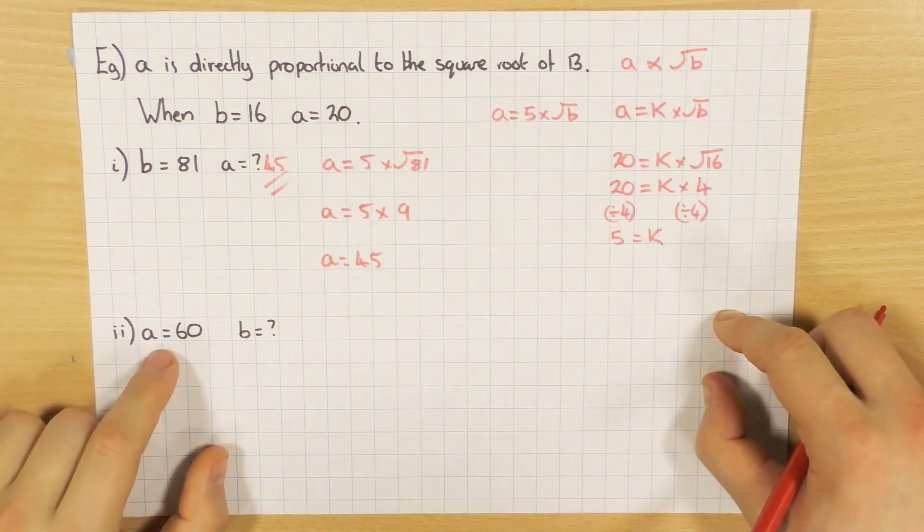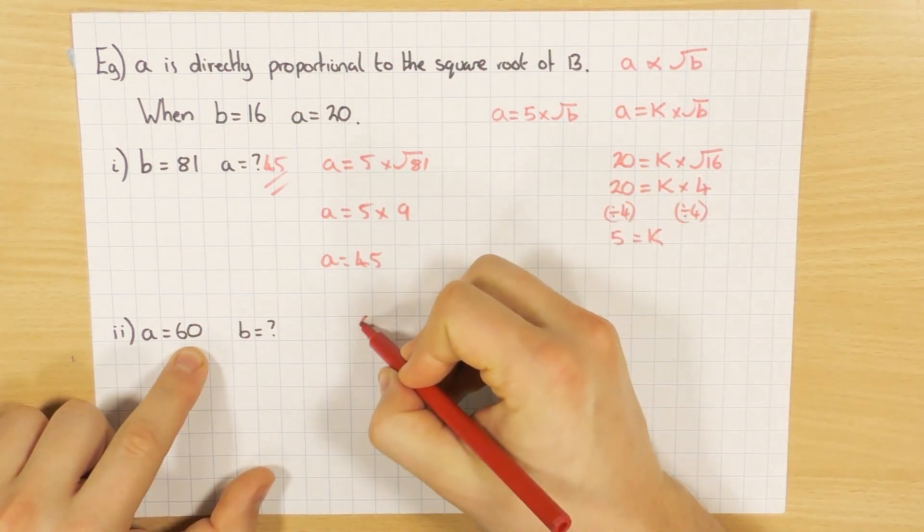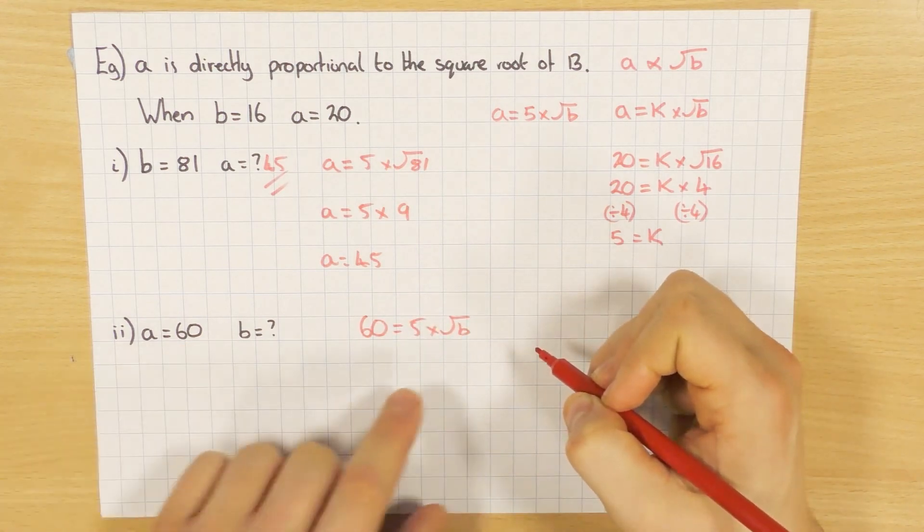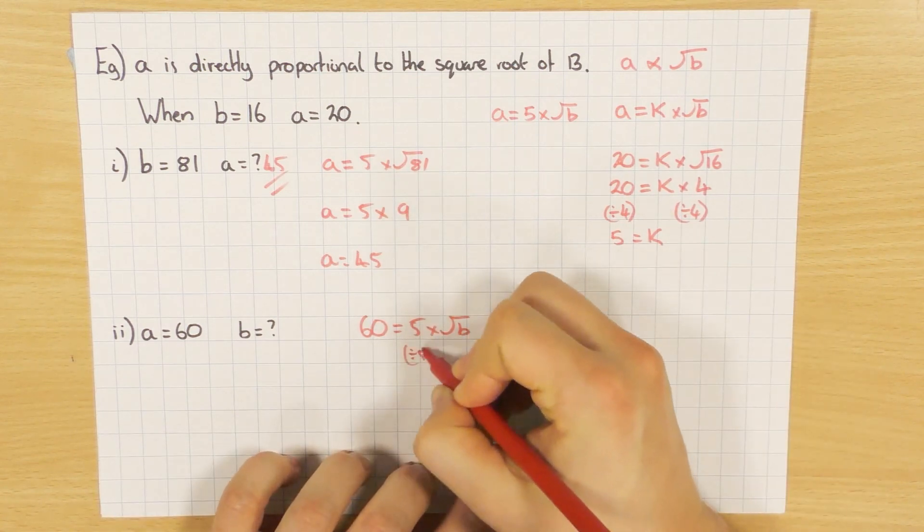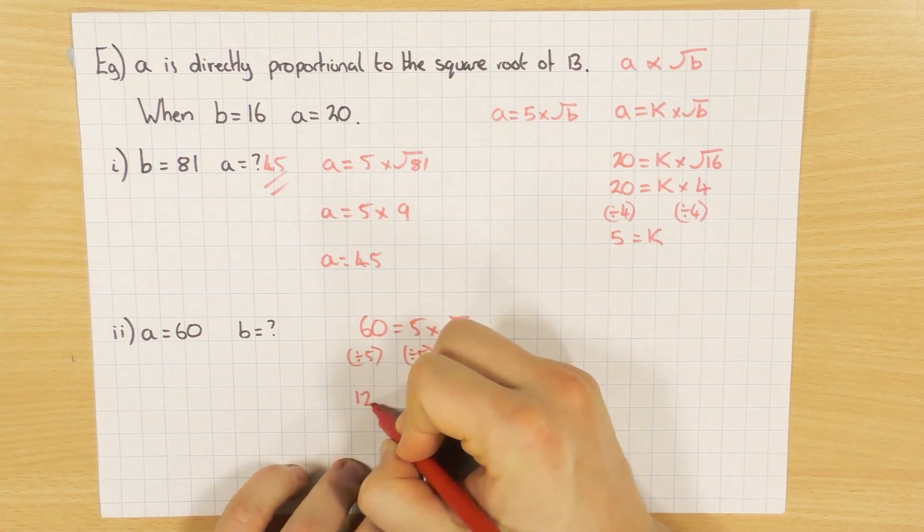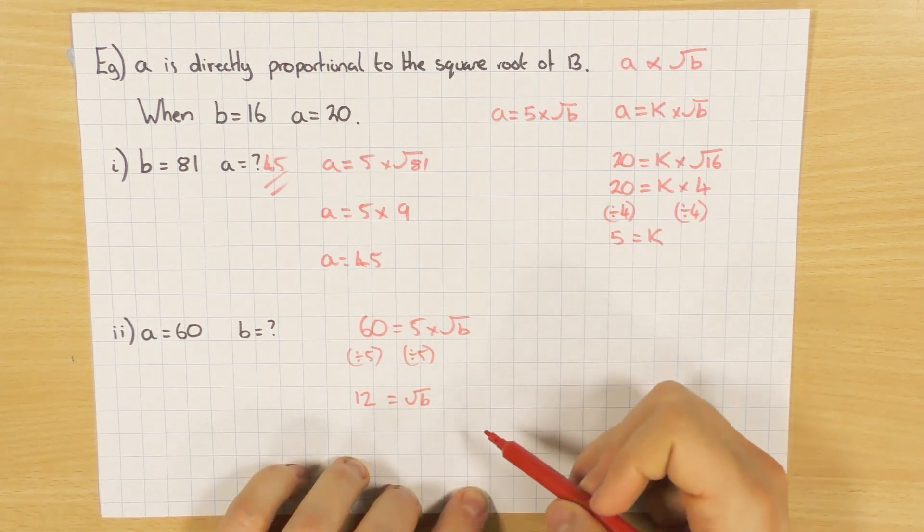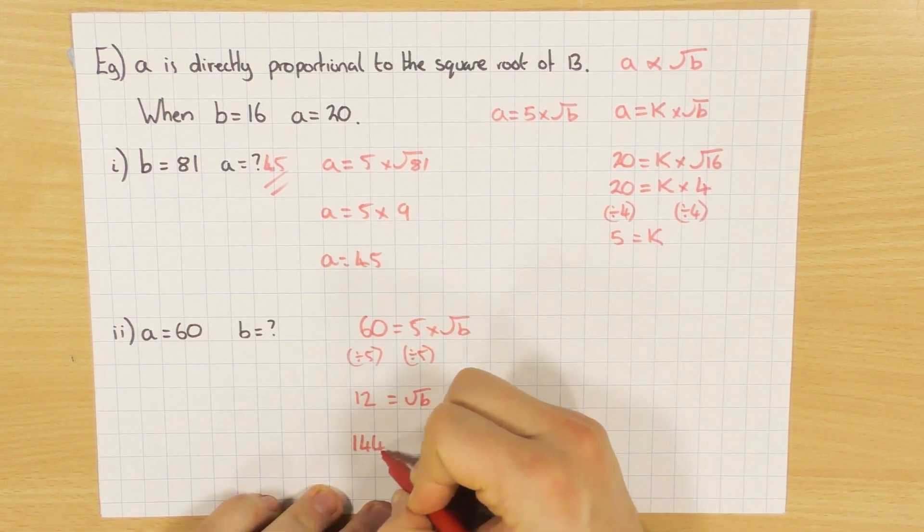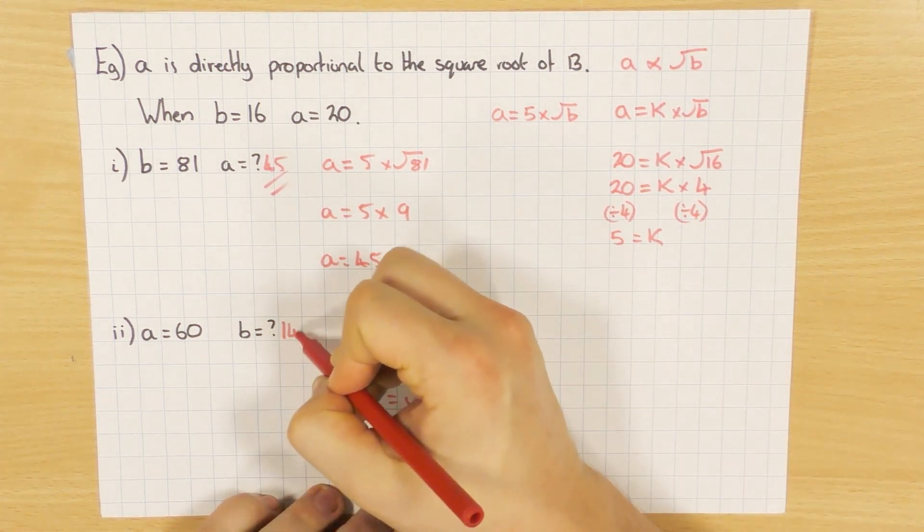And the final one I'm going to do for you today is when a is 60, so plug that into here. We'll substitute it in. So 60 equals 5 times the square root of b. So rearrange this. And the minute I'm timesing by 5, so I'm going to divide both sides by 5. So 60 divided by 5 is 12. And then that's the square root of b. Now I just want b. What's the opposite of square rooting? Squaring. So square both of these. So 12 squared is 144. And the square root of b squared is just b. That's why we do it. So that one there would be 144.